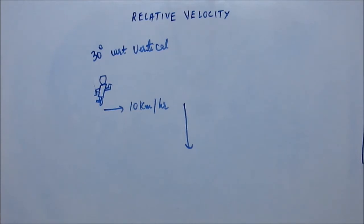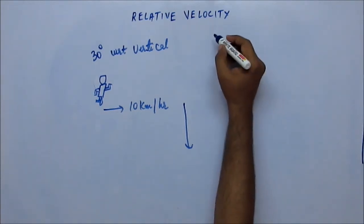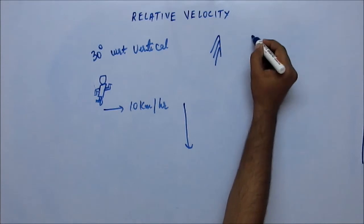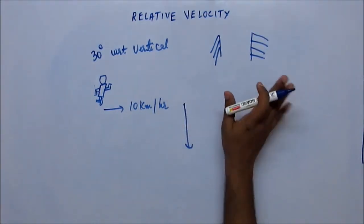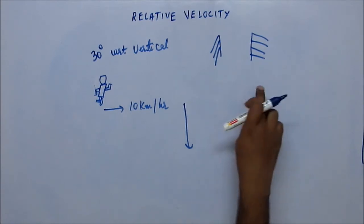Let's try and solve this. It was given that the rain is coming at 30 degrees with respect to vertical, but it was not given 30 degrees like this or 30 degrees like this. On which side of the vertical the rain is coming? We will consider both sides and we will eliminate one of them.